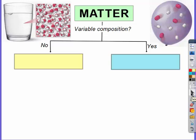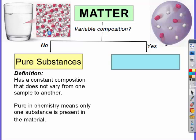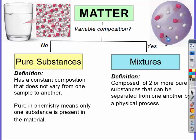Matter can be broken down into two categories based on if it has a variable composition. Over here on the left, this is not a variable composition. Everything is the same. That would be a pure substance. Pure substances have a constant composition. It does not vary from one sample to another. Pure in chemistry means only that one substance is present. If it does have a variable composition like this picture on the right, notice I have multiple things in the container, then it's a mixture. Mixtures are composed of two or more pure substances that can be separated from one another by a physical process.